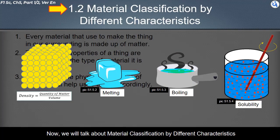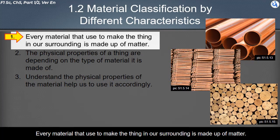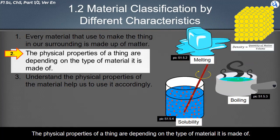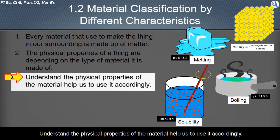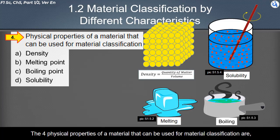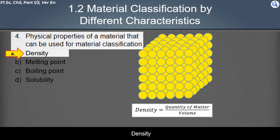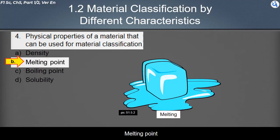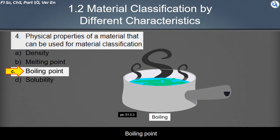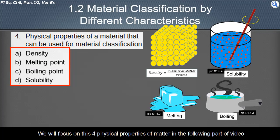Now we will talk about material classification by different characteristics. Every material used to make things in our surroundings is made up of matter. The physical properties of a thing depend on the type of material it is made of. Understanding the physical properties of materials helps us to use them accordingly. The four physical properties used for material classification are density, melting point, boiling point, and solubility.